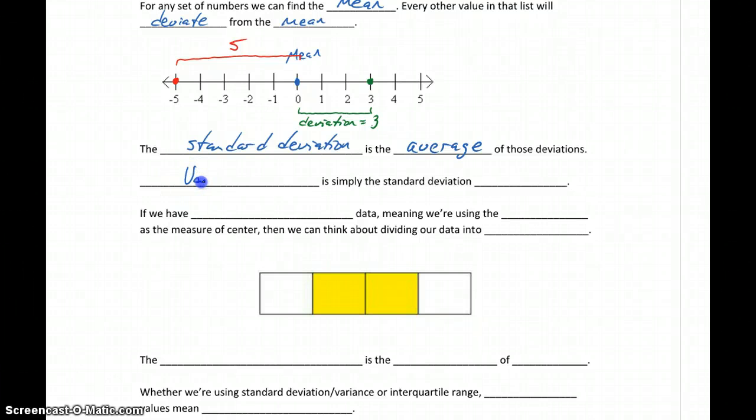So variance, I mentioned, goes along with standard deviation. Variance, to calculate that, we just take the standard deviation and square it. So whatever that number is, we raise it to the second power, multiply it by itself. We just square that value to get the variance. The variance is something that we'll come back into contact with later on when we get into inferential statistics. So we'll mostly just introduce it now. We'll typically talk about standard deviation, but it's good to just see that idea of variance and know that's something that will come up more in the future.